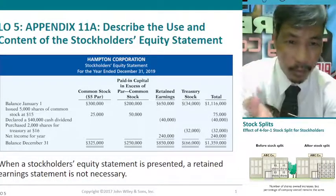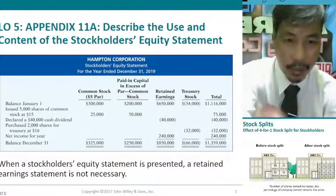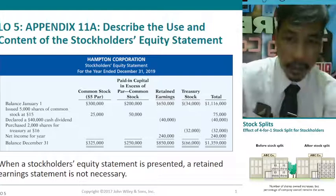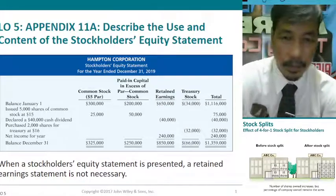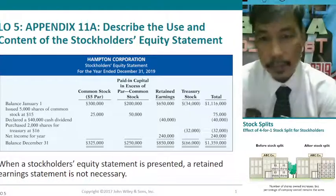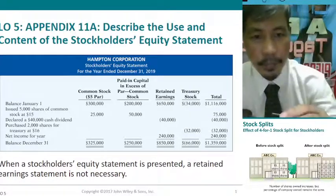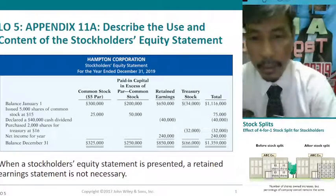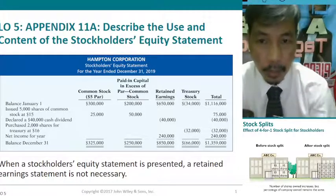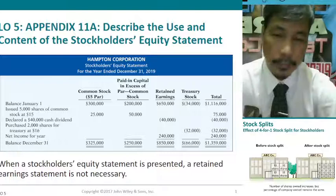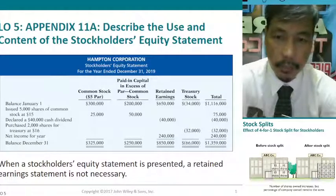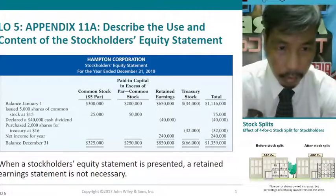The stockholders' equity statement reports common stock, paid-in capital in excess of par, retained earnings, treasury stock, and other types of stock. Everything about stockholders' equity is captured here. This is one very important document, and the retained earnings statement is already included within it.